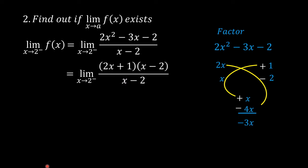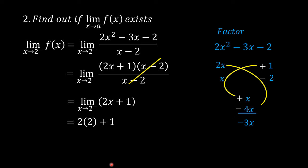This equals the limit of (2x + 1)(x − 2) divided by (x − 2), as x approaches 2 from the left. We can cancel (x − 2) in the denominator because x is not exactly equal to 2; x is only approaching 2 from the left. This becomes the limit of (2x + 1) as x approaches 2 from the left. Substituting 2 for x: 2 times 2 plus 1 equals 5.